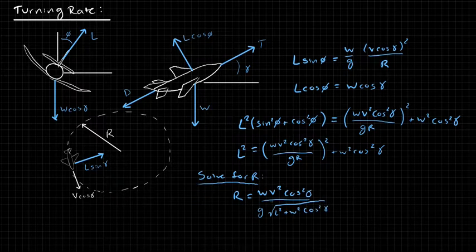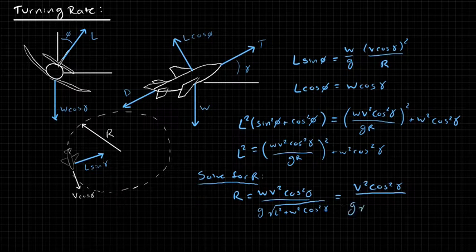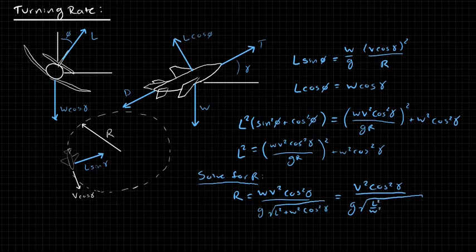And we can simplify this by bringing this W down into the square root, and that simplifies then to be V squared cos squared gamma divided by G times root L squared over W squared plus cos squared gamma.